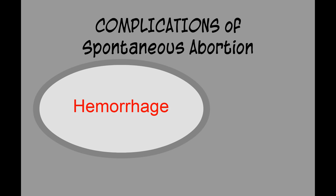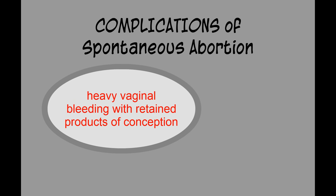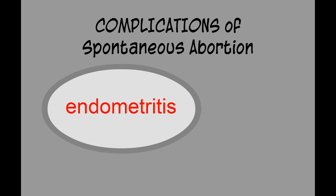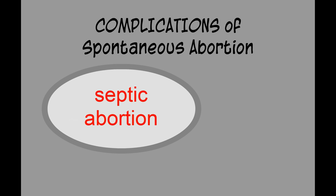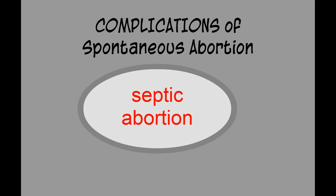Possible complications from spontaneous abortion include hemorrhage, which may occur around the time of spontaneous passage of the pregnancy or related to surgical evacuation. If a patient presents with heavy vaginal bleeding with retained products of conception, then a surgical evacuation should be performed. Endometritis after spontaneous or surgical passage of the pregnancy should be treated with oral broad-spectrum antibiotics. It is very rare now for a patient to develop septic abortion, as this was much more prevalent before the legalization of elective terminations. Signs and symptoms of septic abortion include fevers, chills, lower abdominal discomfort, and foul-smelling vaginal discharge.